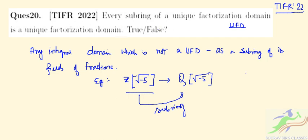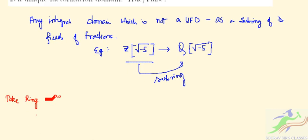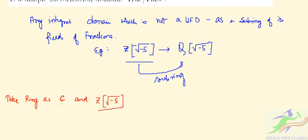We can also take another example. Take the ring C of complex numbers, and define Z[√-5] as a subring of C. So C is the ring of complex numbers and Z[√-5] is the subring — which is not a UFD, not a unique factorization domain.